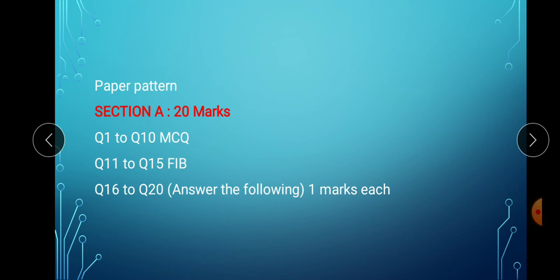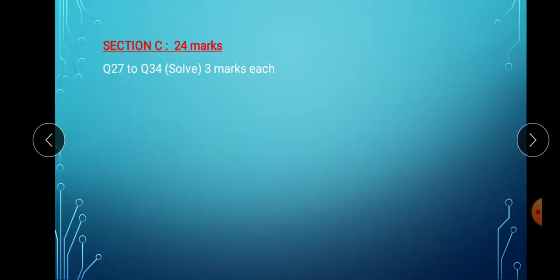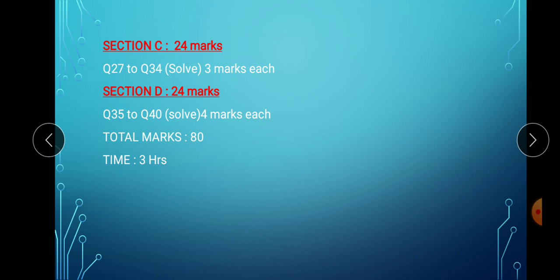Question 11 to 15 are fill in the blanks. The whole statement is required even though it's a maths paper. Questions are compulsory to write down for section A and underline the fill in the blanks. Question 16 to 20 - 1 mark each answer the following. Section B total 12 marks, question 21 to 26 solve, 2 marks each. Section C is 24 marks, question 27 to 34 solve, 3 marks each. Section D 24 marks, question 35 to 40 solve, 4 marks each. Total marks is 80 and time limit is 3 hours.